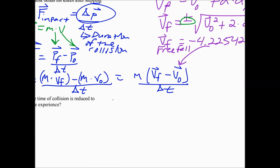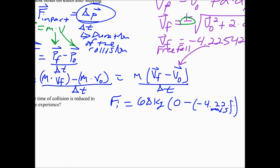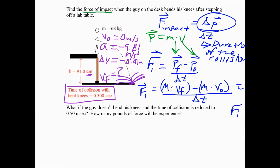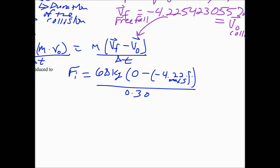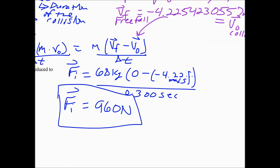So the force of impact equals the mass of our jumper, 68 kilograms, times the final velocity after the collision (0 meters per second) minus negative 4.225 meters per second, all divided by the duration of the collision, 0.300 seconds. Typing that into the calculator and applying sig figs, I get 960 newtons as the force of impact on the jumper.